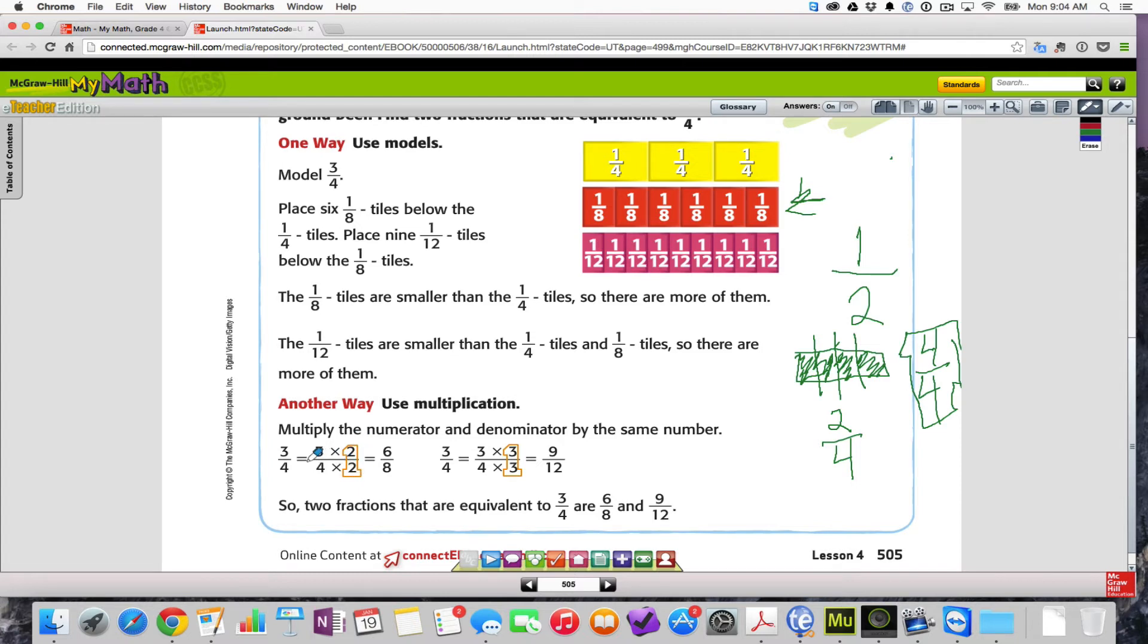When we multiply fractions, we multiply straight across. Three times two is six. And four times two is eight. And so, we find out that six-eighths is the same as three-fourths. And you can see that up here in the model.